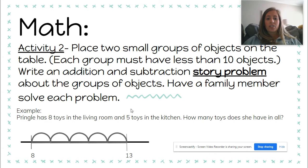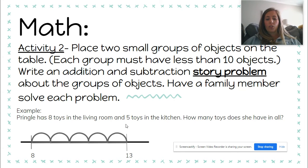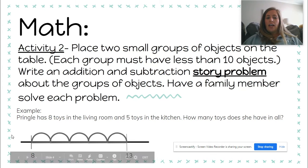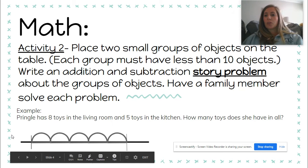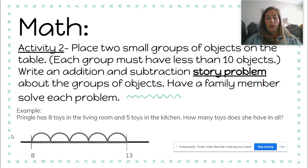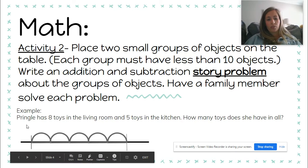So here's an example of a story problem: Pringle has eight toys in the living room and five toys in the kitchen. How many toys does she have in all? And then have a family member — brother, sister, mom, or dad — help you solve the problem, or they will solve it by themselves.